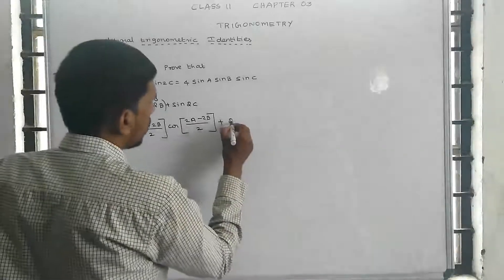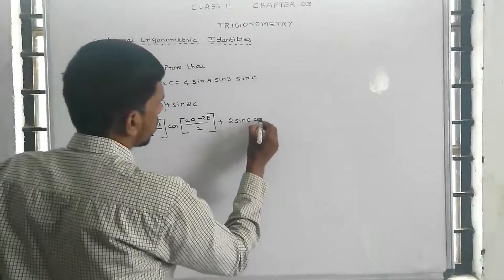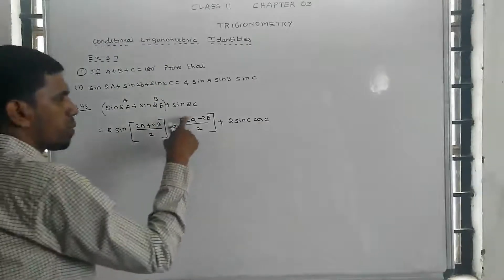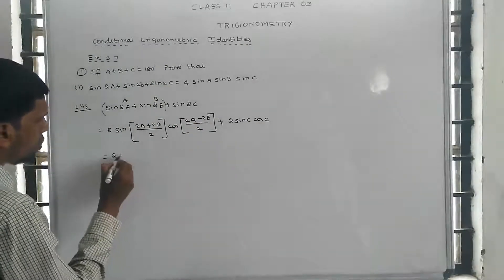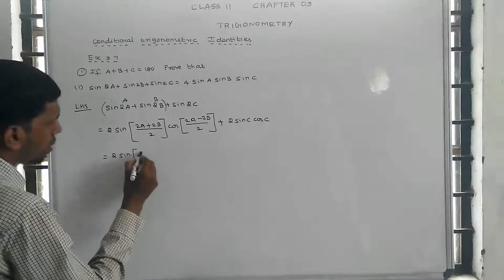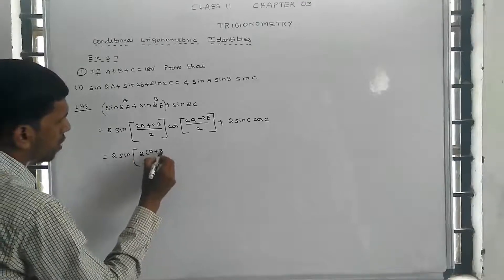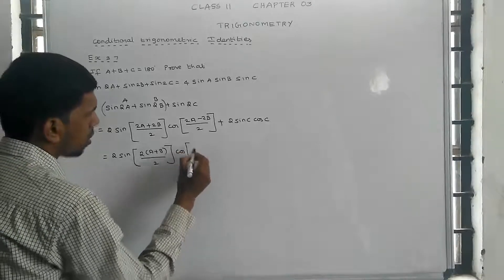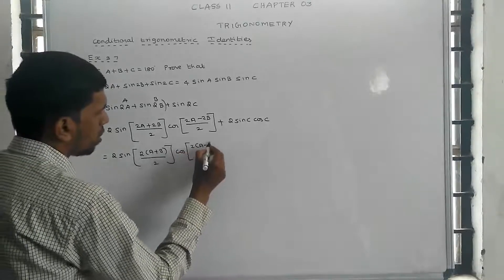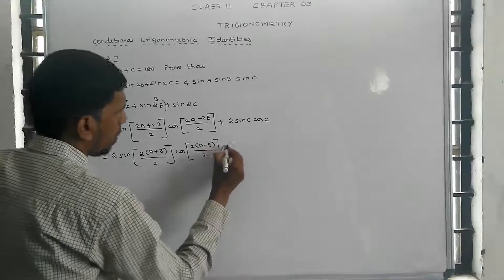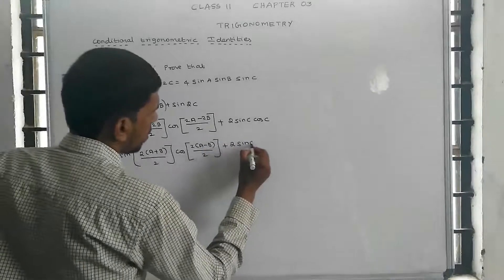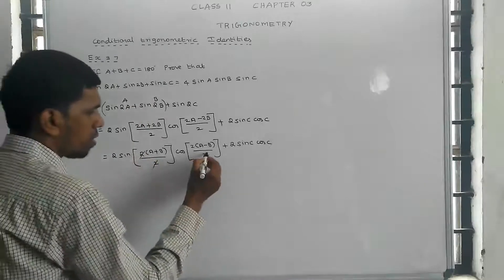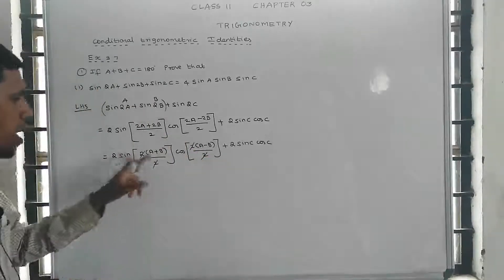This gives us 2 sin c cos c. Simplifying: 2 times 2 cancels to give sin((a+b)/2) cos((a-b)/2), plus 2 times 2 cancels for sin c cos c. So we have sin((a+b)/2) cos((a-b)/2) plus sin c cos c.